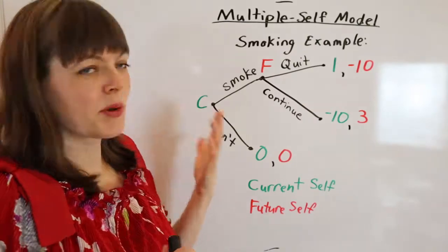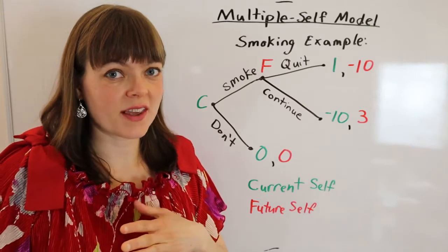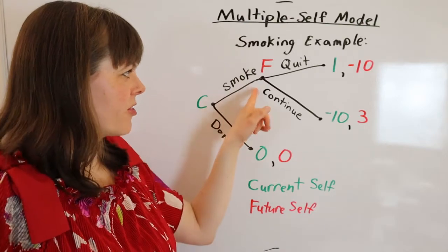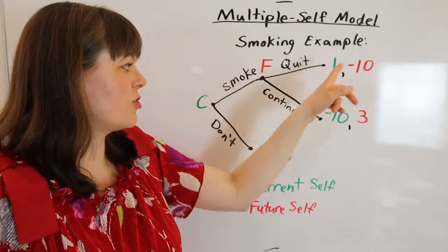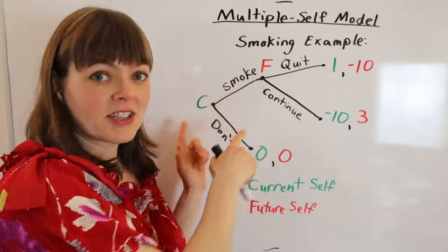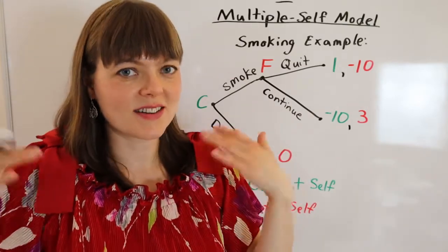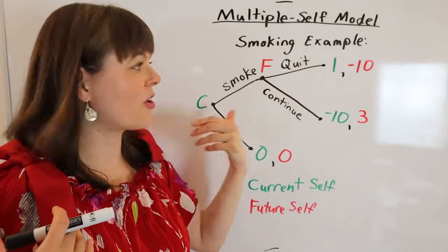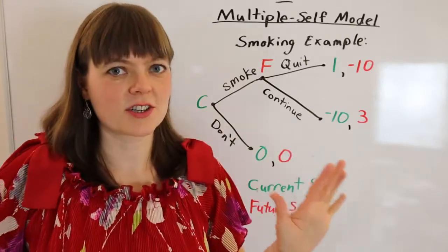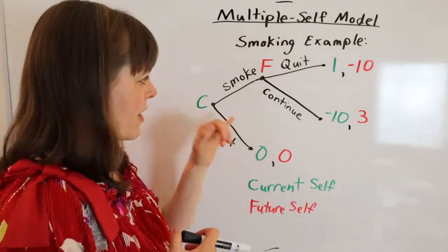A simple example of a multiple self model would be a game tree where the current self is trying to decide: do I try smoking, or do I refrain from trying smoking? Then the future self, if you're a smoker, has to decide: do you quit or do you continue? It's easy to see why there might be different motivations for these different versions of the self — and even chemical and brain differences between the self that's a non-smoker and the future self that's a smoker. So I set this up as a game tree. I'm not going to go over how to solve game trees, but I'll put a link in the description below about where you can go to learn to solve game trees.